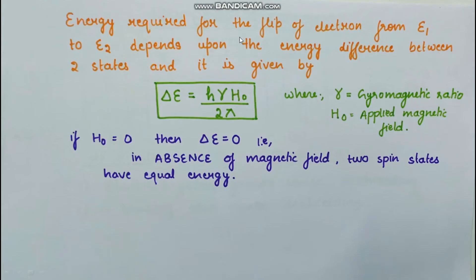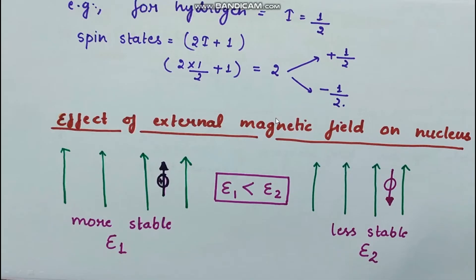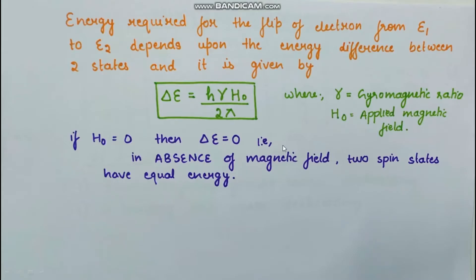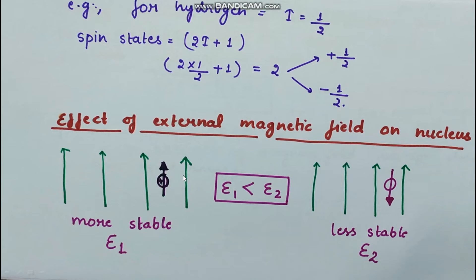The energy required to flip the nucleus from the lower energy state to the higher energy state depends on the energy difference between the two states, calculated by the formula ΔE = hγH₀/2π, where γ is the gyromagnetic ratio and H₀ is the applied magnetic field. The energy difference is directly proportional to the applied magnetic field. So if the applied magnetic field is zero, the energy difference is also zero — in the absence of a magnetic field, the two spin states have equal energy.